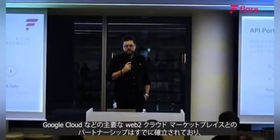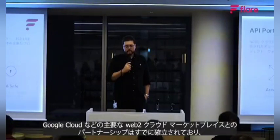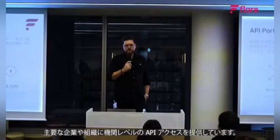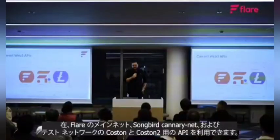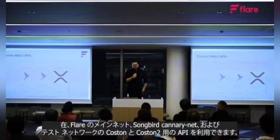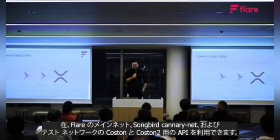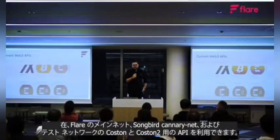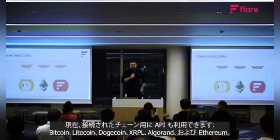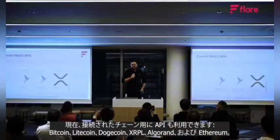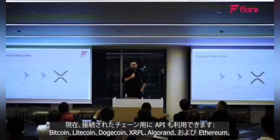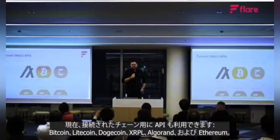Partnerships with key Web2 cloud marketplaces such as Google Cloud are already in place to provide institutional-grade API access to leading businesses and organizations. We currently have APIs available for Flare's mainnet, the Songbird Canary Net and our test networks, Costin and Costin2. We also have APIs available for our connected chains, currently Bitcoin, Litecoin, Dogecoin, XRPL, Algorand and Ethereum.